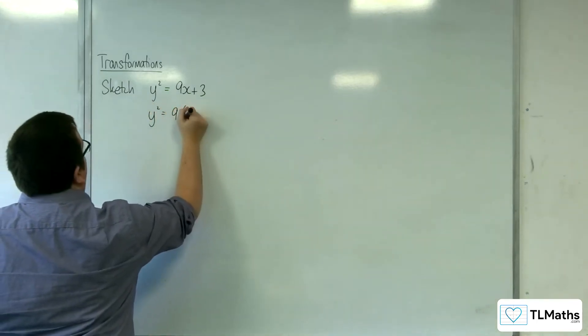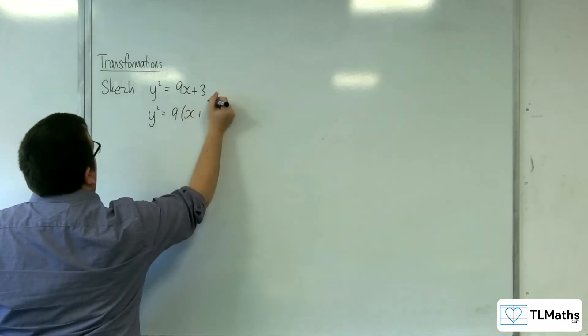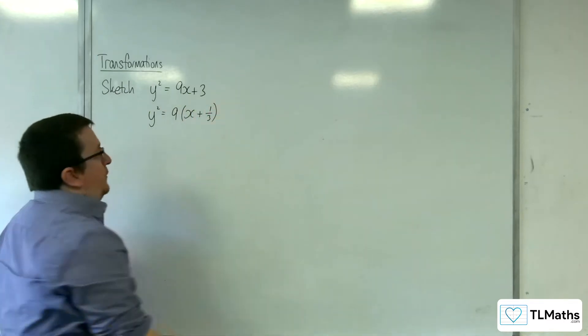First thing to do is factorize that right hand side. So I'm going to pull 9 outside and have x plus, well 3 over 9, so 1 third inside the bracket.